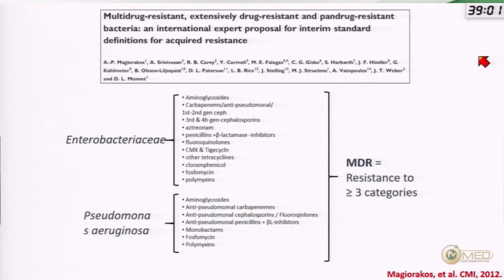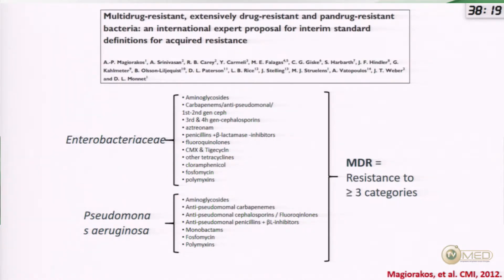This is a provocative slide on the meaning of multidrug resistance in bone and joint infection. There has been an effort, as shown in the paper by Magiorakos and collaborators, to standardize the definition of multidrug resistance, which is important for clinical trials. But from a clinical point of view, when I see my patient, resistance means the scenario where I cannot use the antibiotic that is going to change my patient's prognosis.